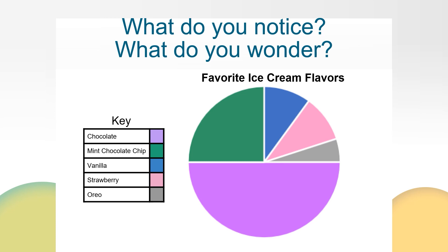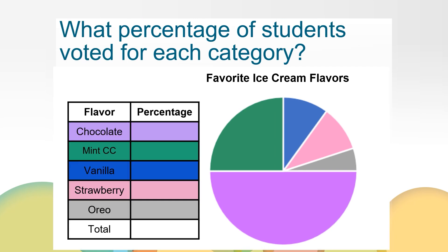You might be thinking this circle graph is not showing me the percentage of students that voted for each flavor of ice cream. You're right, it's not showing us that yet. Let's look at the relationships on this graph a little bit closer to see how we can determine the percentage of each flavor. Let's start with chocolate because we can easily see that it is one half or 50% of the graph. Now let's move on to mint chocolate chip. That looks like one fourth or 25% of the graph. So now I have 75% of the graph accounted for with two flavors, which tells me that vanilla, strawberry, and oreo make up 25% of the rest of the graph.